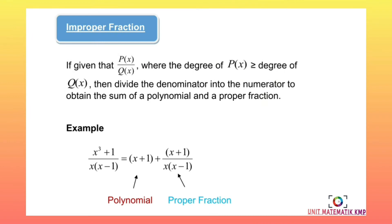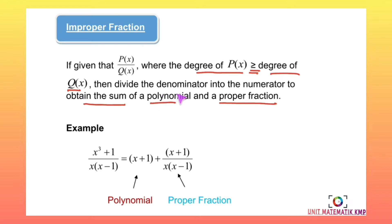Next we move to the last part, which is improper fraction. If given p(x) over q(x) where the degree of p(x) is more than the degree of q(x), then we need to divide the denominator into the numerator to obtain the sum of a polynomial and a proper fraction. All we need to do is perform long division.